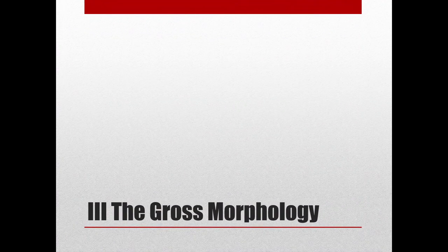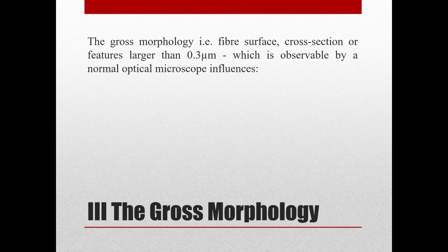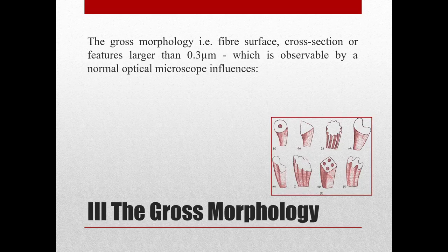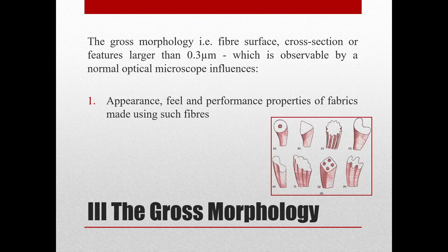At the third level, it is the gross morphology — meaning the fiber surface, cross section, or features larger than 0.3 micrometers observable by a normal optical microscope — that will also influence certain properties. For example, if one simply changes the cross section of a polymer while the polymer material remains the same across all cross-sectional shapes, one will still find that properties change from one shape to another, simply because the morphology has been changed. Changes in appearance, feel and performance properties of fibers result from such morphological differences.